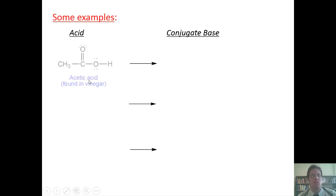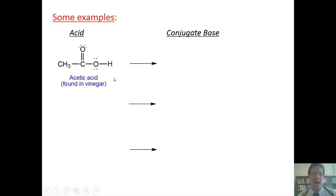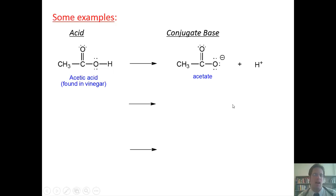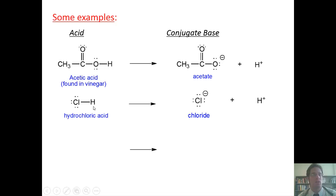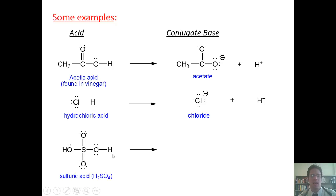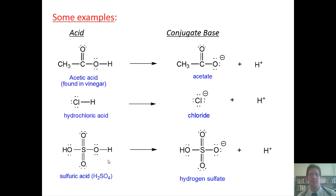Here are some examples. If I've got acetic acid, to draw the conjugate base, all you have to do is take the acidic hydrogen, remove it, and replace it with a negative charge. The conjugate base of acetic acid is acetate. For hydrochloric acid, I remove the hydrogen and replace it with a negative charge — so chloride is the conjugate base of hydrochloric acid. For sulfuric acid, I take one of the acidic hydrogens, remove it, and replace it with a minus charge — so hydrogen sulfate is the conjugate base of sulfuric acid.